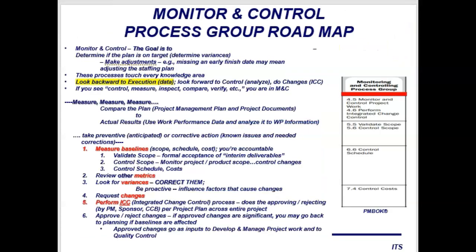Corrective action brings expected performance in line with actual deviations, while preventive action addresses anticipated deviations. I measure the baselines, compare the plan to actual results, look for variances, and take charge to correct them. I request changes, and in the process perform integrated change control — ICC — where a change gets reviewed and approved by a board. If approved, it flows back into several other processes such as quality control and direct and manage project work.